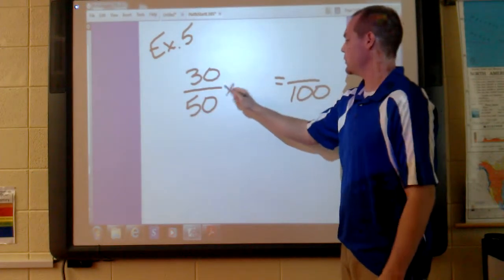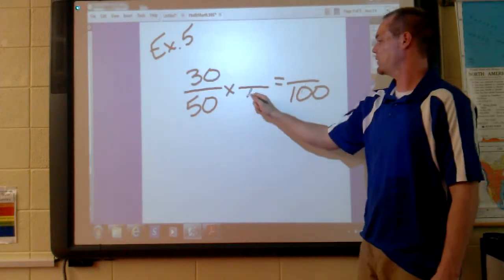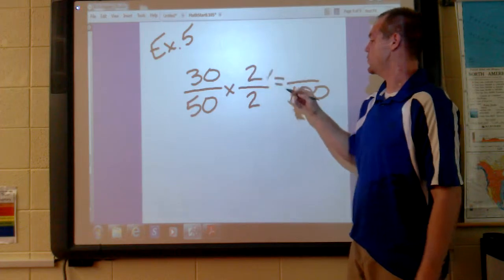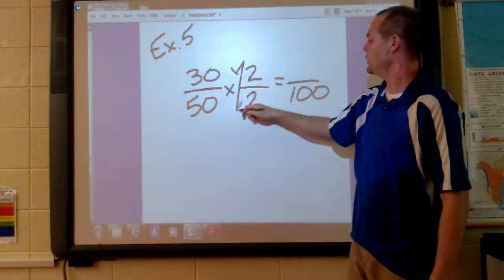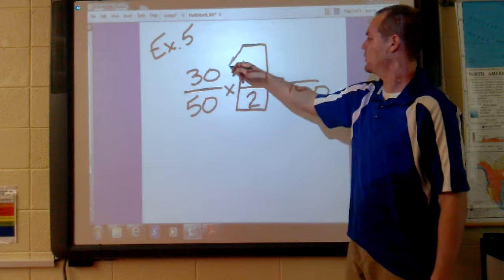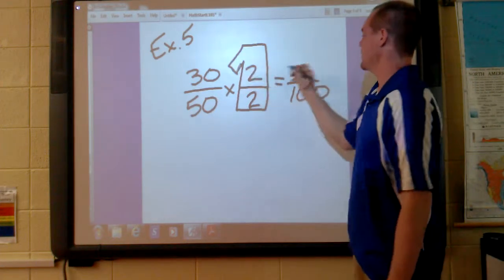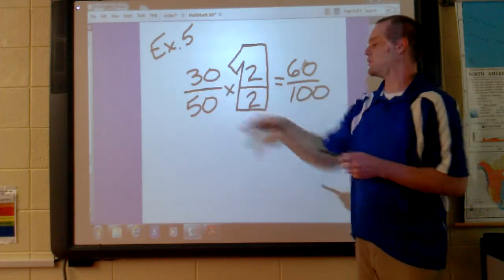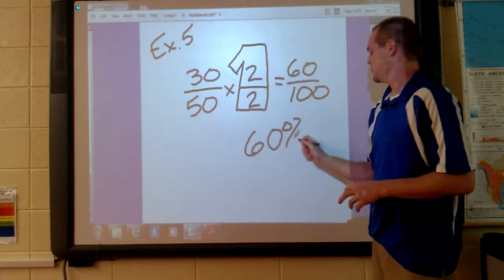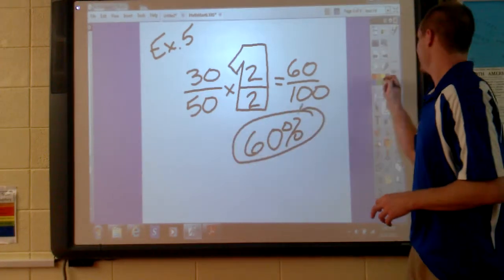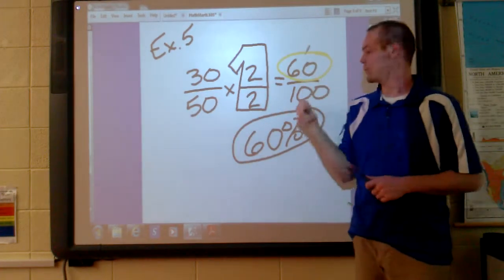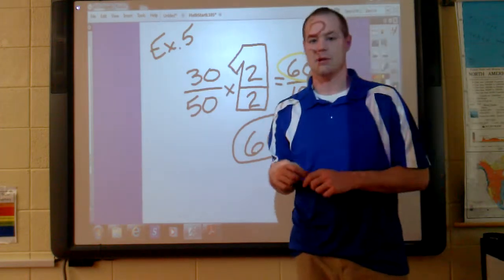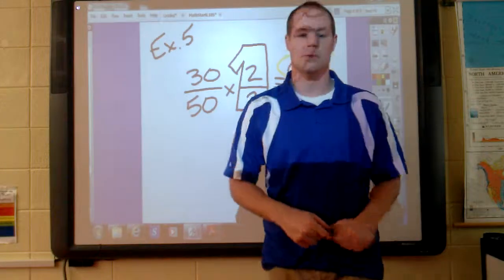50 times 2 is 100. 30 times 2, because this fraction needs to be equal to 1. Equal to 1. 30 times 2 is 60. So what percent is 30 out of 50? It is 60 percent. Again, it's just your numerator when your denominator is 100. If you have any questions, feel free to write them down on your answer sheets. Let me know about them tomorrow, and I will see you then.